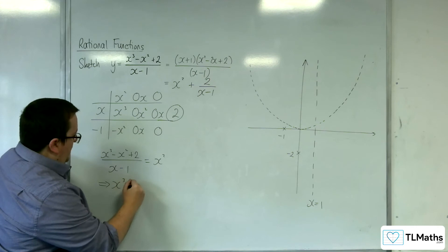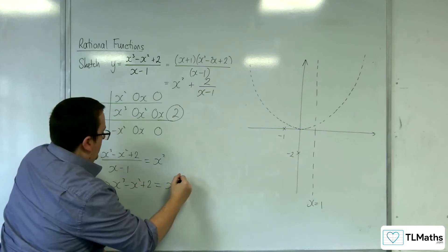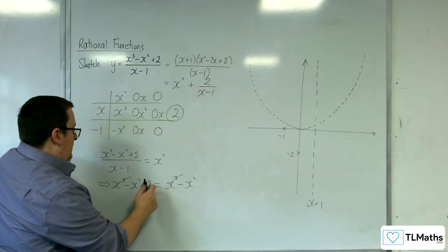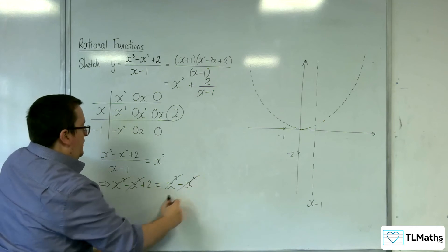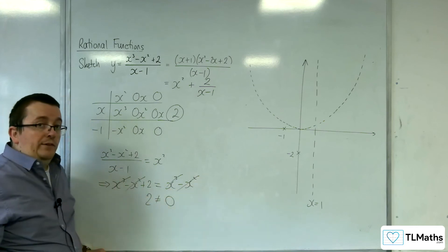So, x cubed take away x squared plus 2 multiplied by the x take away 1, so x cubed take away x squared. Then I can subtract the x cubed from both sides, add x squared to both sides, and so I get 2 is equal to 0, which, of course, it isn't.